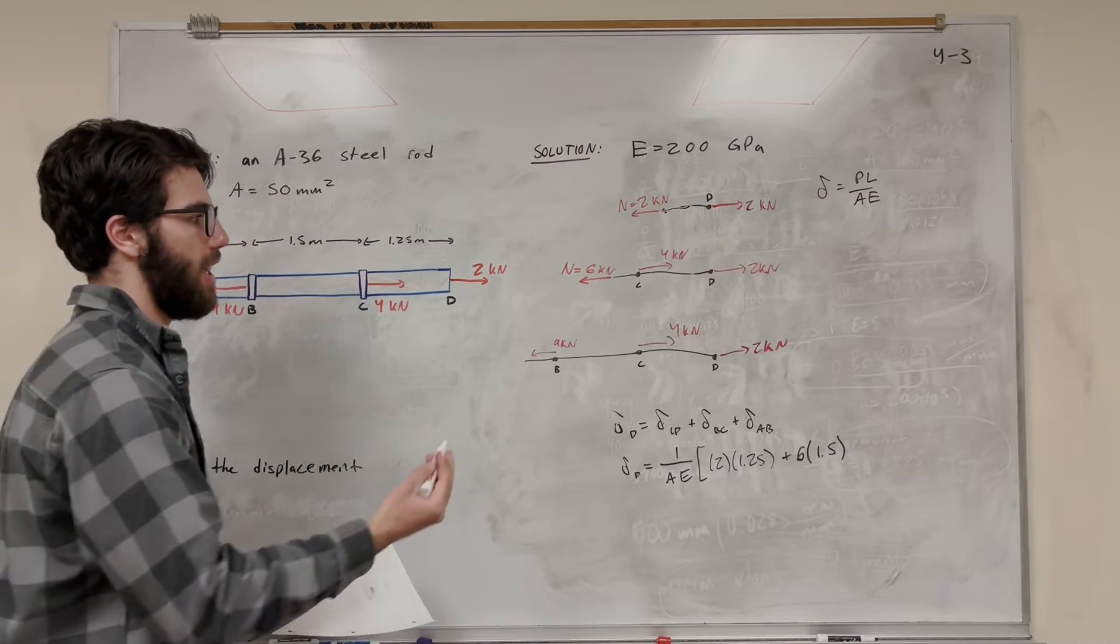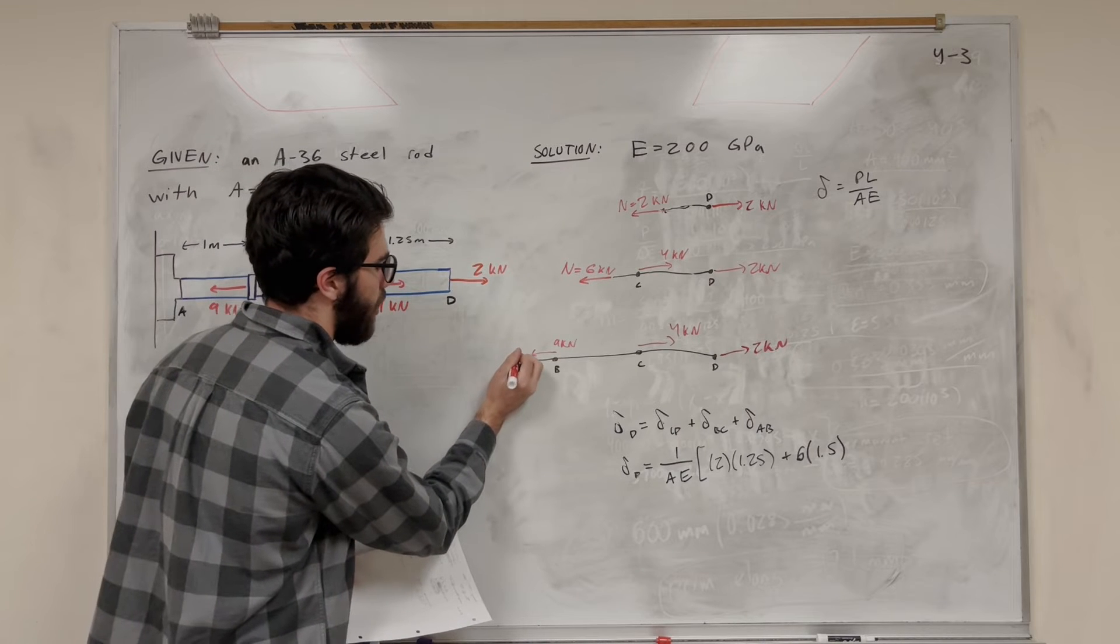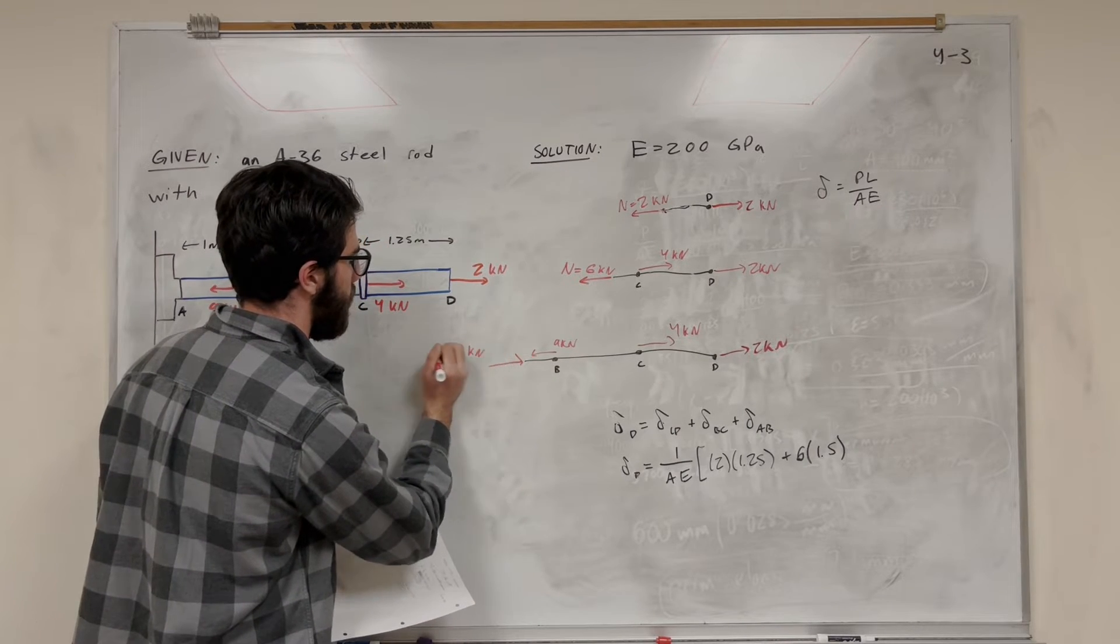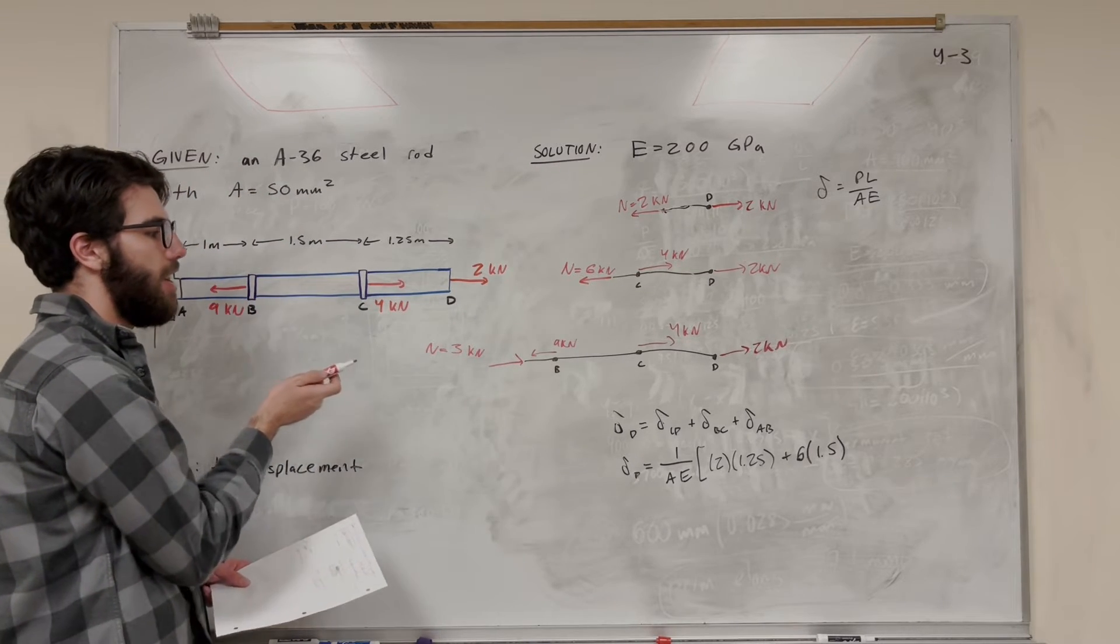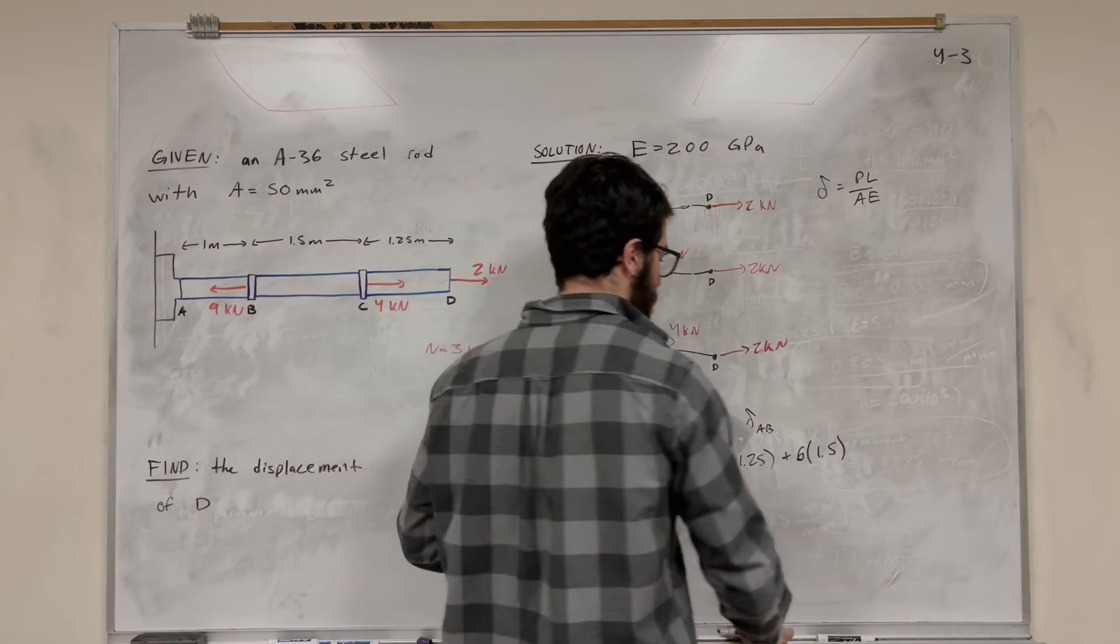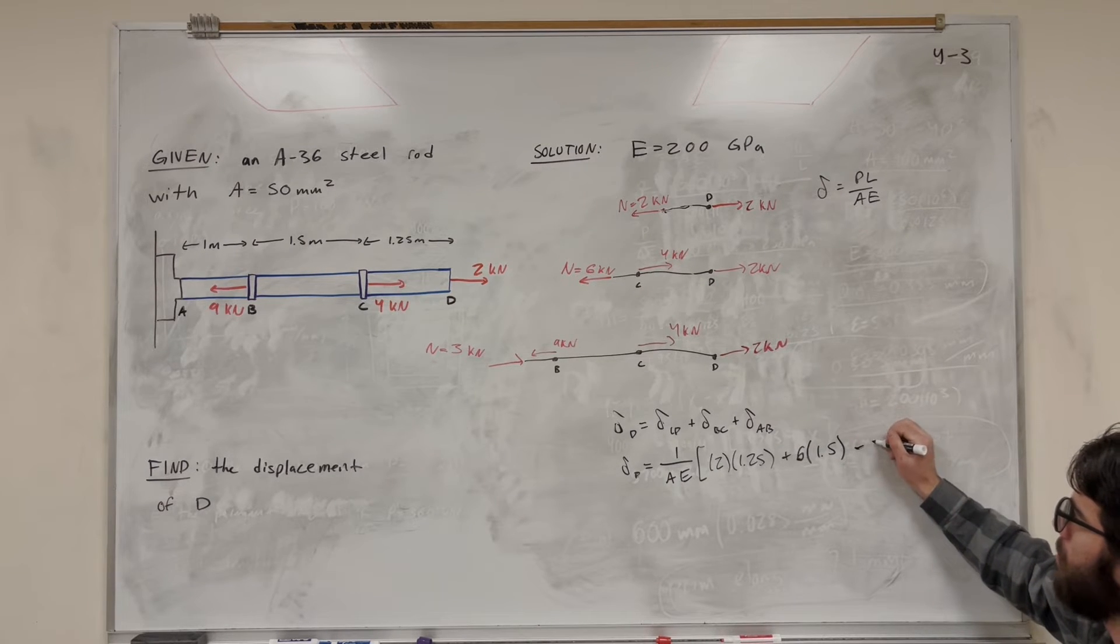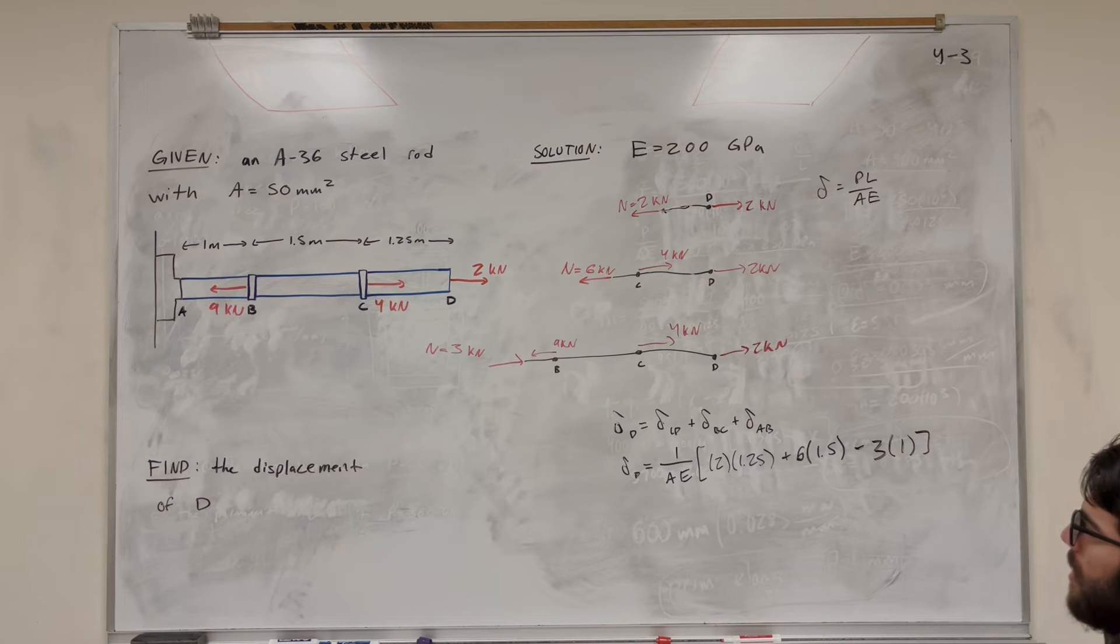So if we do sum of the forces in the X, we'll see we have 6 pushing to the right but 9 pushing back. So to counterbalance that, our normal force is going to have to be pushing to the right with 3 kilonewtons. So our normal force is pushing in between A and B. And because our normal force is pushing in, it's making us want to contract. We're going to make sure to use a negative number to represent our displacement is smaller in this area. So it's going to be minus that 3 kilonewton load, and the length of that beam is 1 meter.